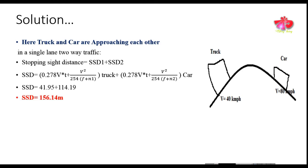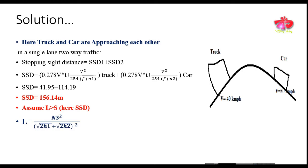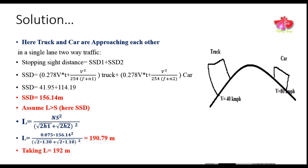To find the length of the curve, we assume the length L is greater than the stopping sight distance S. Using the formula L = N·S² / (√(2·S1) + √(2·S2))², we get L = 190.79 meters. We adopt the length of the curve as 192 meters.